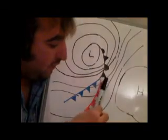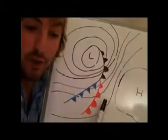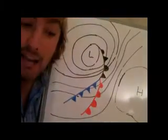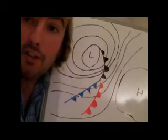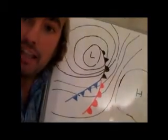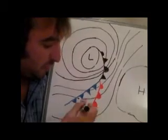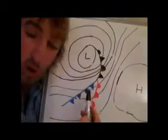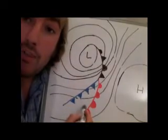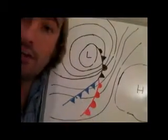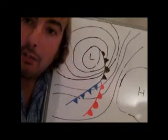When you actually get to the warm front itself, you can get very heavy rain and poor visibility, which is going to affect your yachting. Once the warm front passes — it may have gone through overnight — we're in what we call the warm sector. This is an area of warm air, and the weather settles down a little bit.